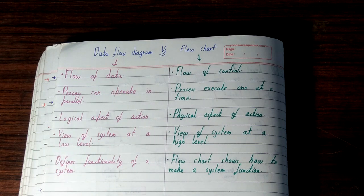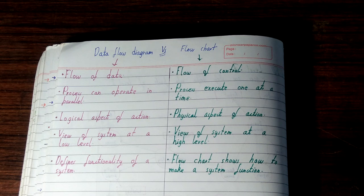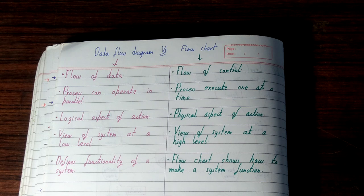But in case of flow chart, you are showing a flow of control - on which step you are taking which decision and how control is shifting from one process to another. Data flow diagram and flow chart are totally different things.